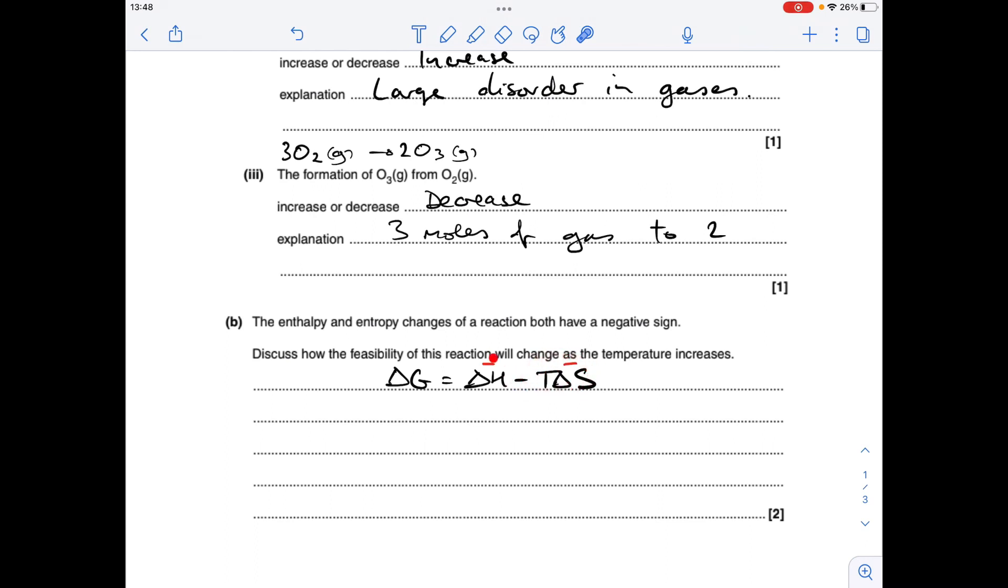So you're combining a negative delta H with an increasingly positive T delta S term. And so the upshot of that is delta G is going to become less and less negative, and so the reaction is less feasible.